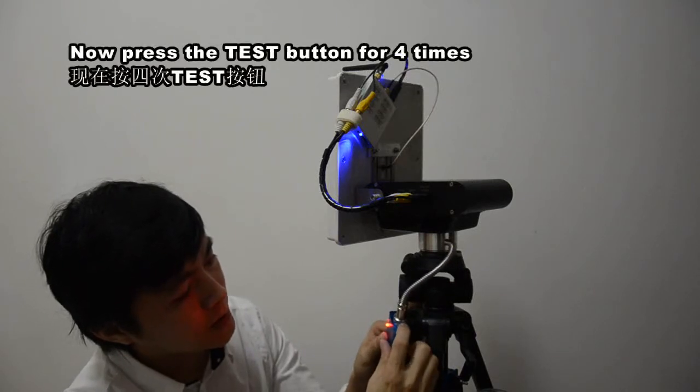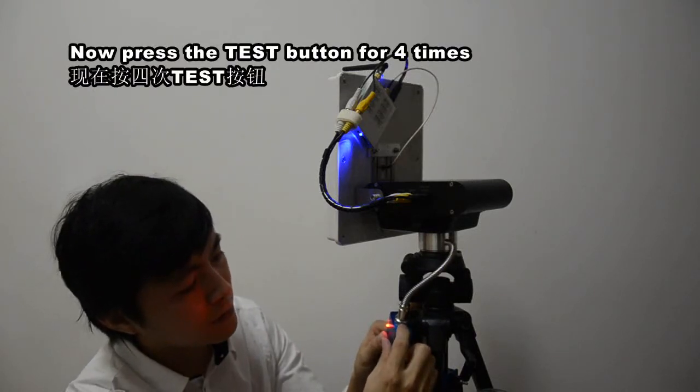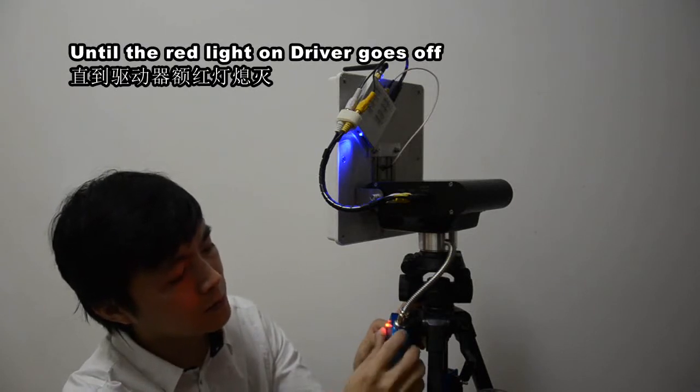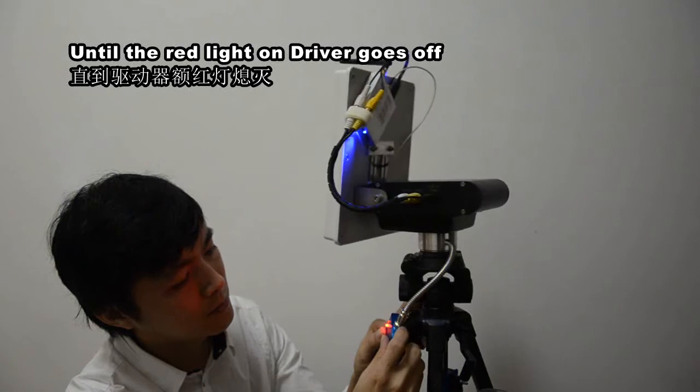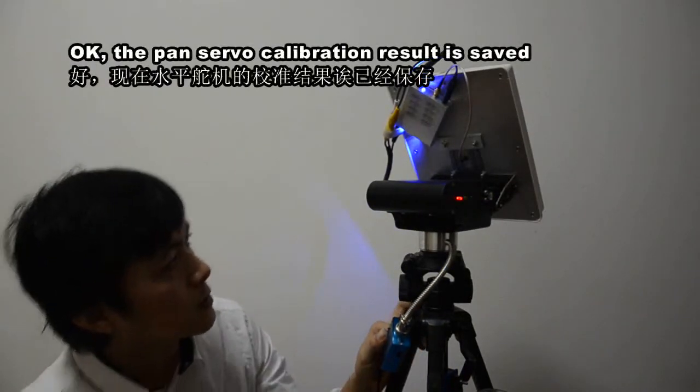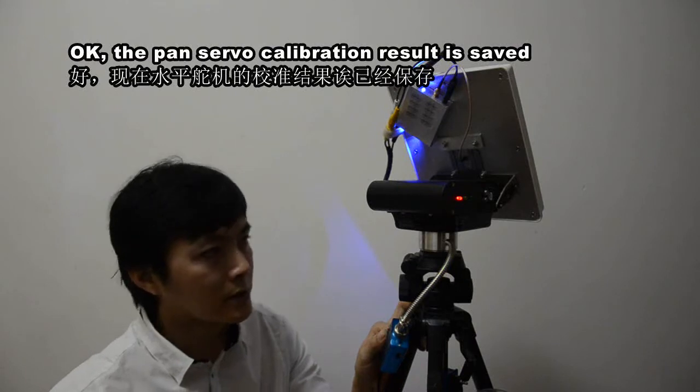Now, press the test button for 4 times until the red line on the driver goes off. Okay, the pan servo calibration result is saved.